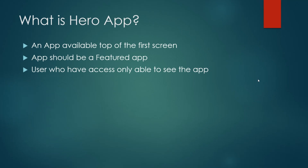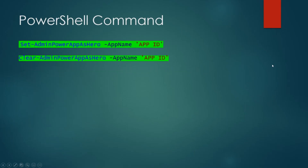For a hero app, one important thing to understand: you cannot just make any app a hero app directly. First you need to make it a featured app, and then it can be a hero app. In a tenant there can be only one hero app, but there can be multiple featured apps. Also note that if an app has not been shared with a particular person, making it a hero app or featured app does not give them access.